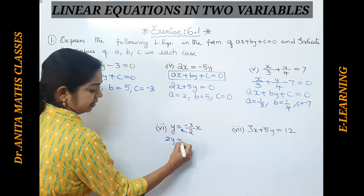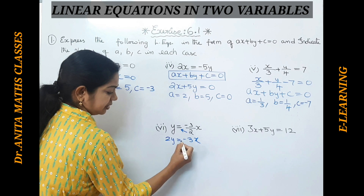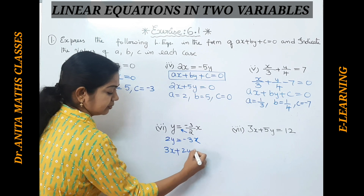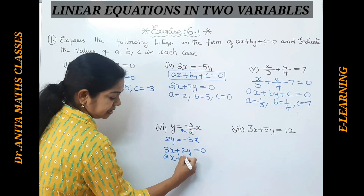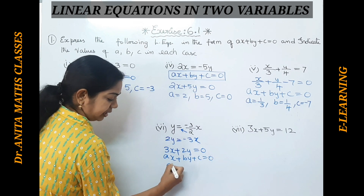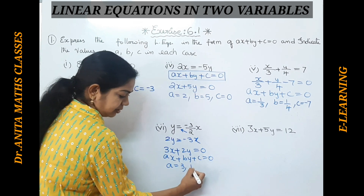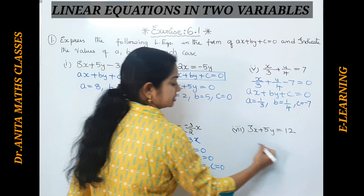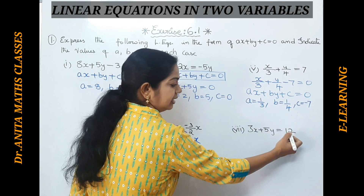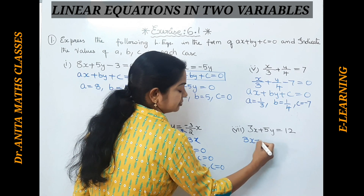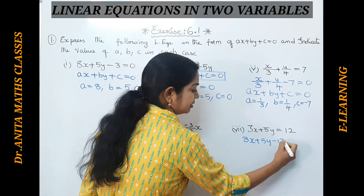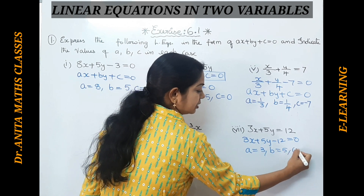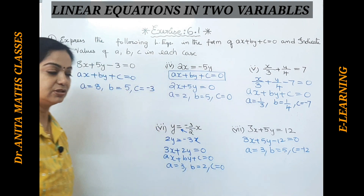For the next question, since it is a fraction we cross-multiply: 2y = −3x. Bringing x to this side: 3x + 2y = 0. This is in the form ax + by + c = 0, where a = 3 and b = 2. We don't have a c value, so c = 0. For the next one, the equation is already in the form; bring the constant inside to get 3x + 5y − 12 = 0, giving a = 3, b = 5, c = −12. Pause the video and note it down.